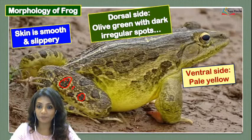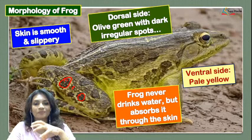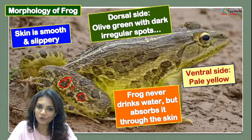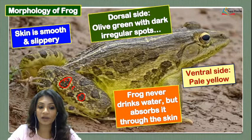Frogs don't drink water. Whatever water requirement is needed by the frog is fulfilled through the skin. That's why frogs live near water — they don't drink it, but the water requirement is absorbed through the skin of the frog.